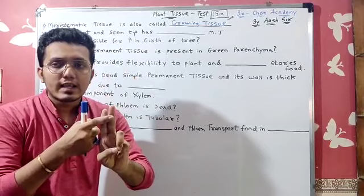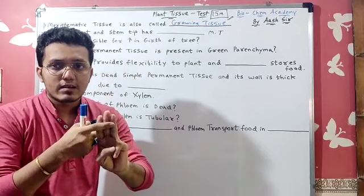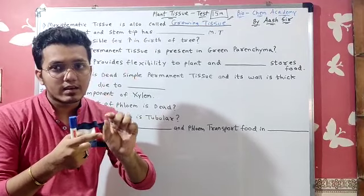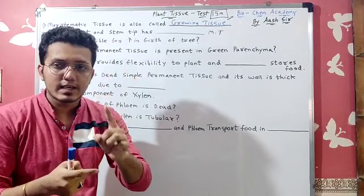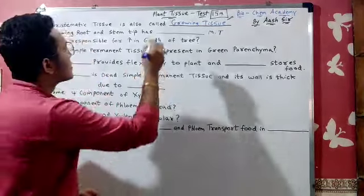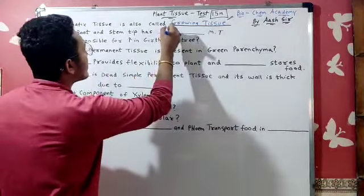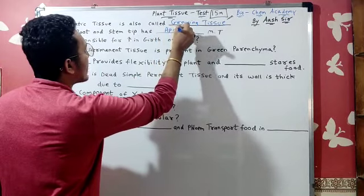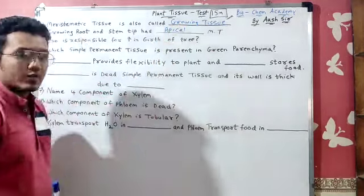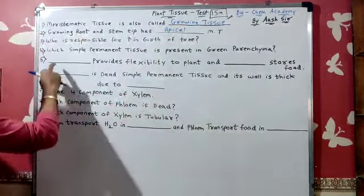The types are apical, intercalary, and lateral. Apical tip is there — so which meristematic tissue? Apical meristematic tissue. Next.